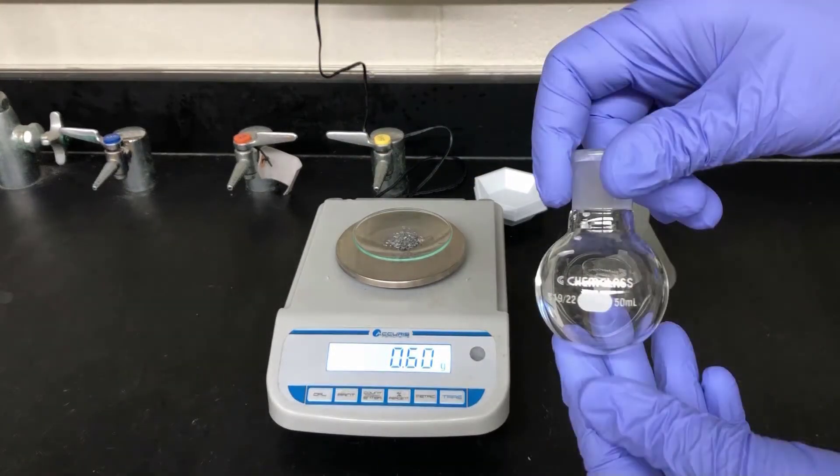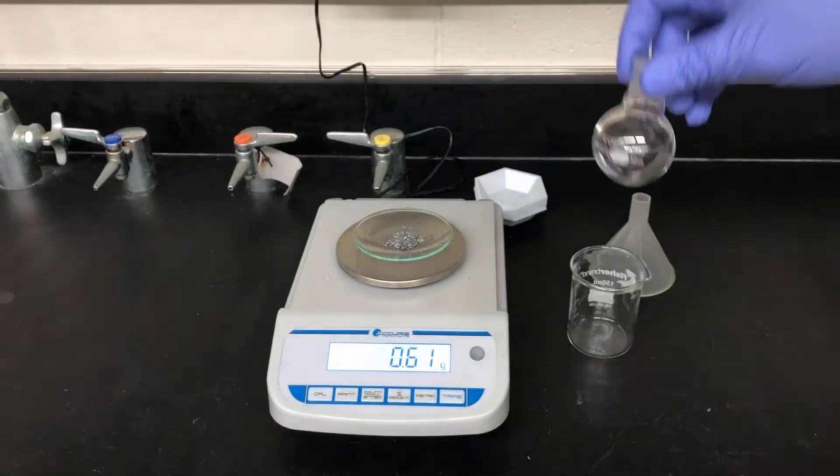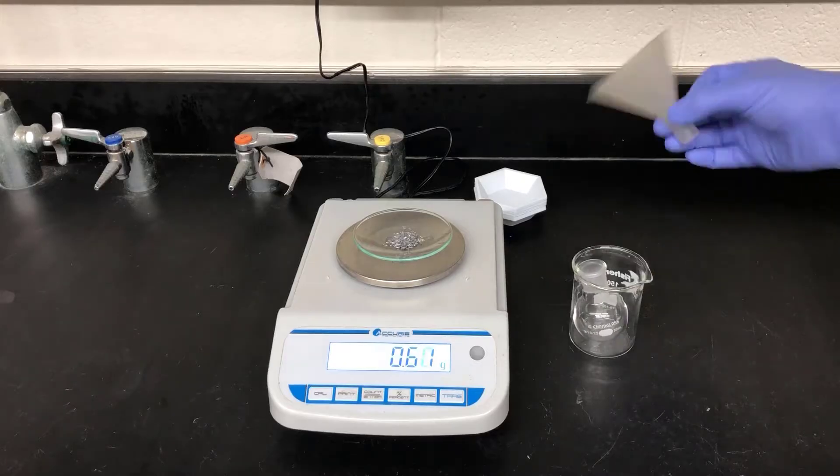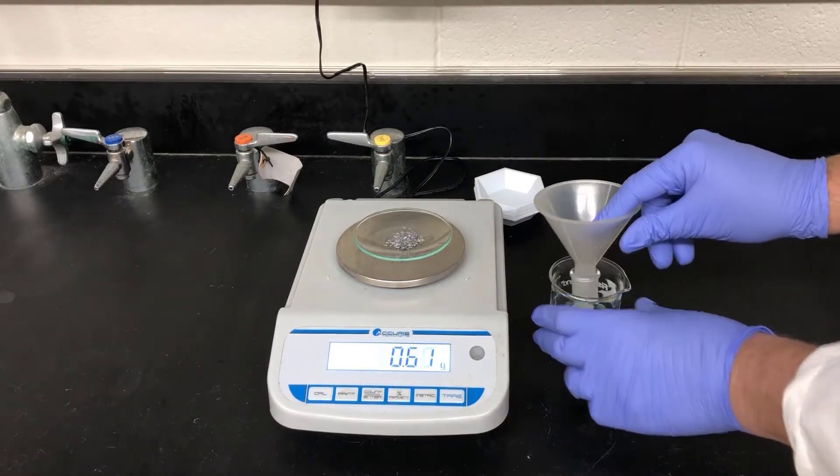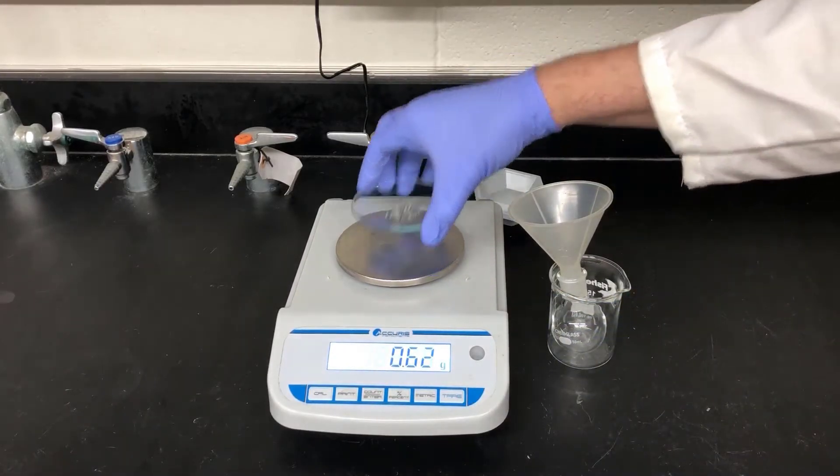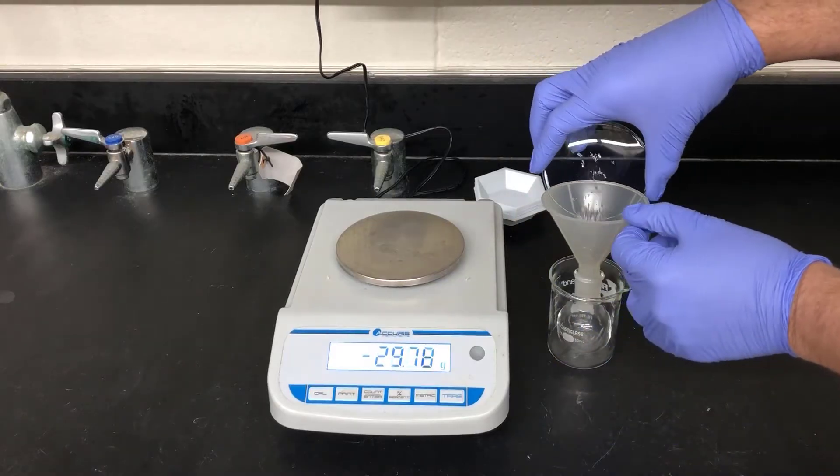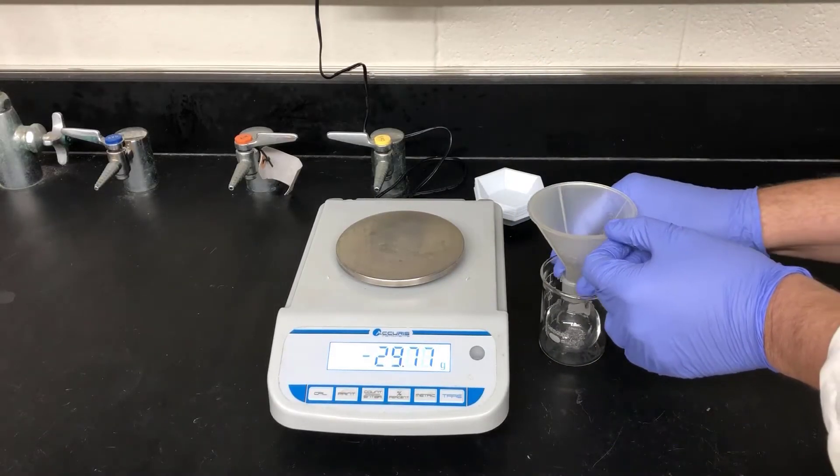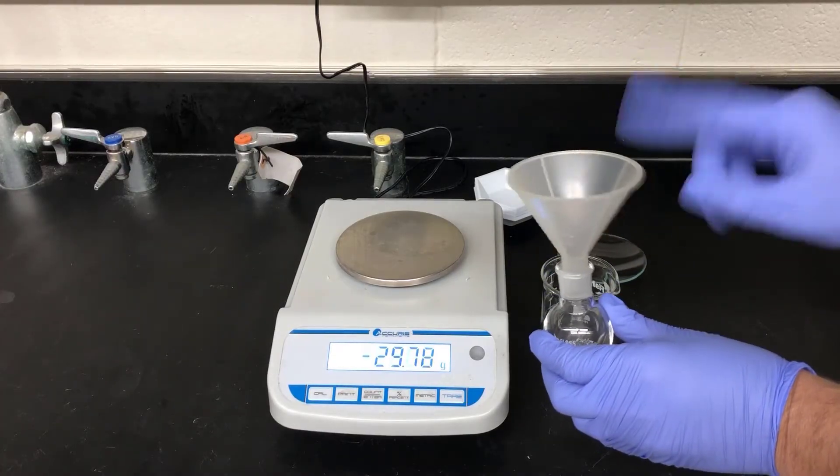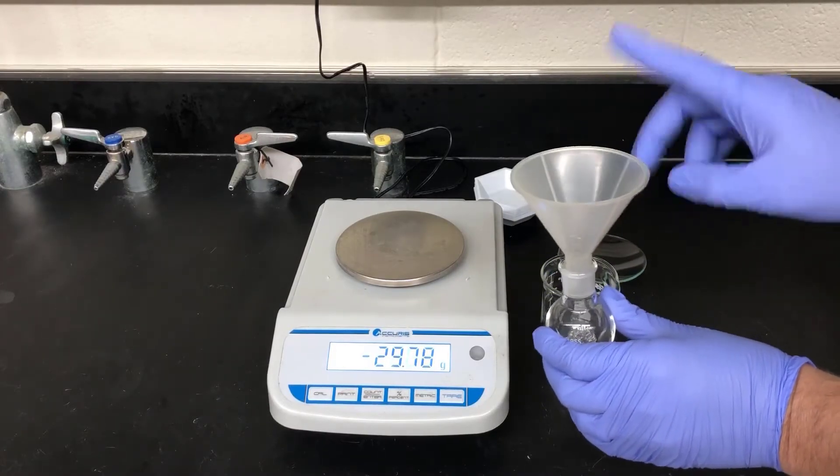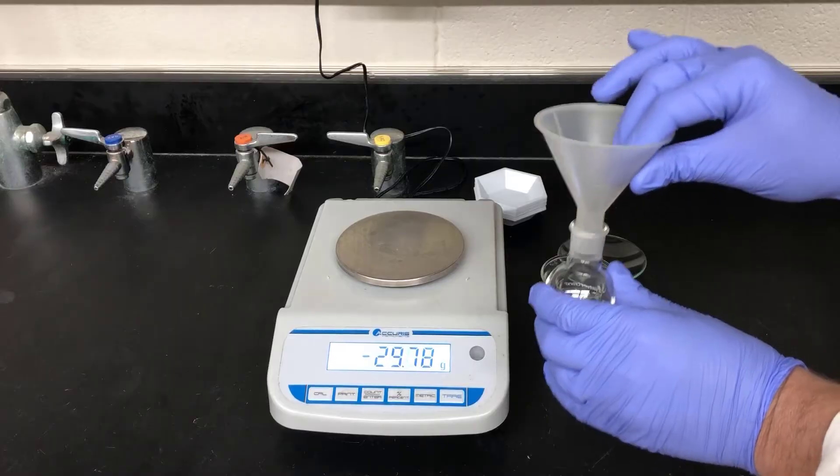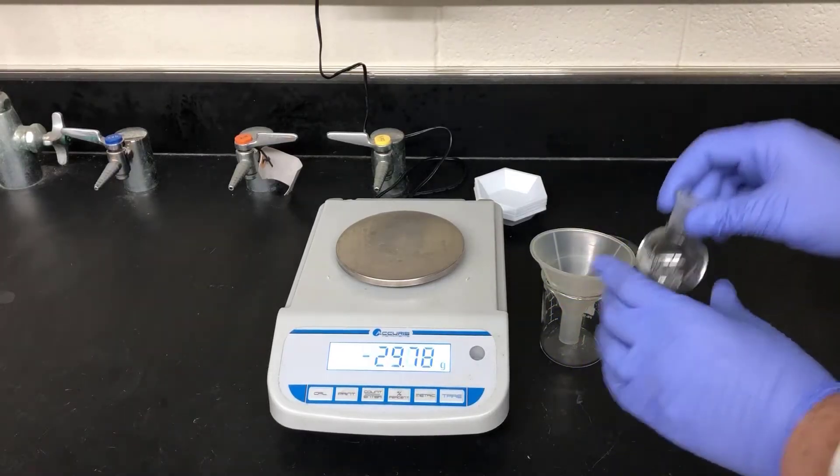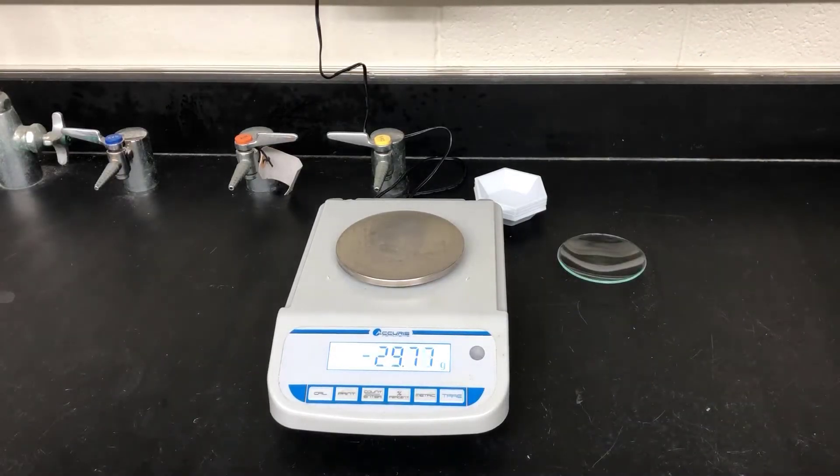I'll be using a 50ml round bottom flask to carry out today's reaction. The Grignard reaction is very sensitive to moisture. Some procedures will even have you oven dry your glassware ahead of time, or flame dry it. I've found that that's not necessary, but it is important that there not be any visible water present on any of your glassware. Make sure that you don't wash your glassware with water immediately before doing this Grignard experiment. It's better to have dirty glassware than have wet glassware.